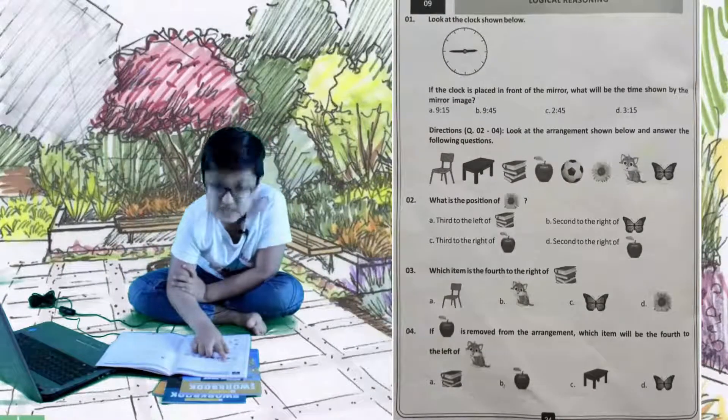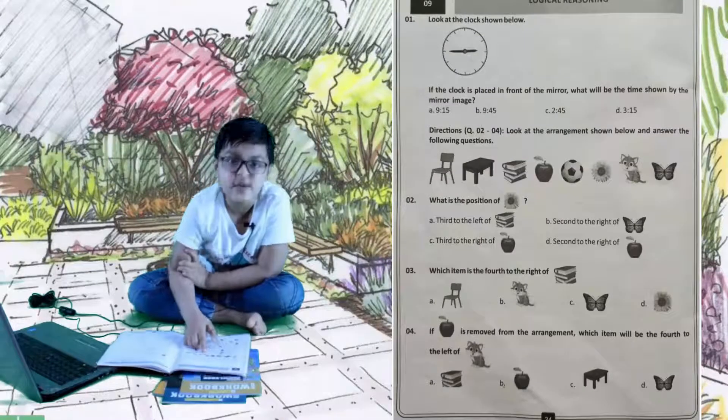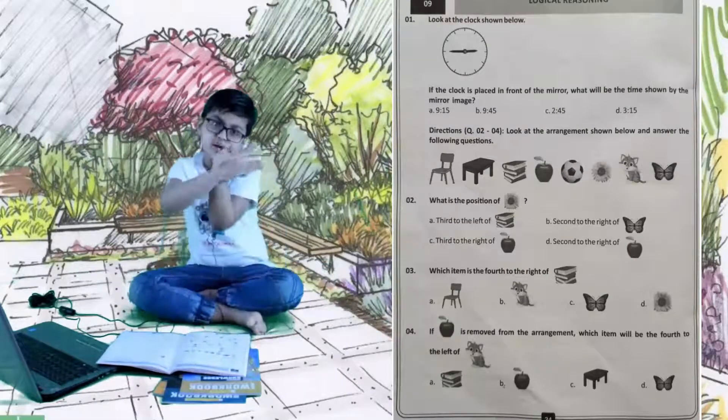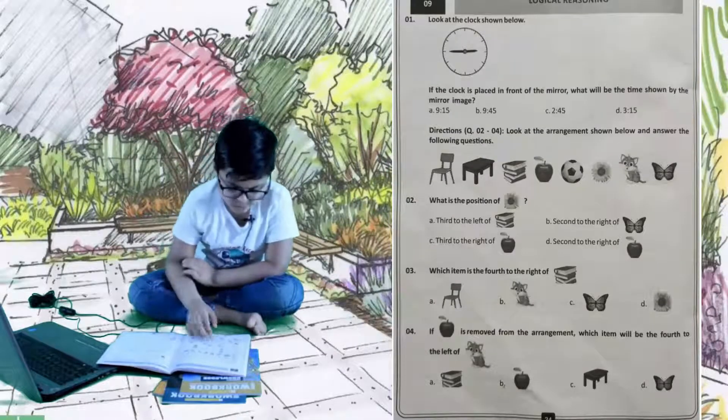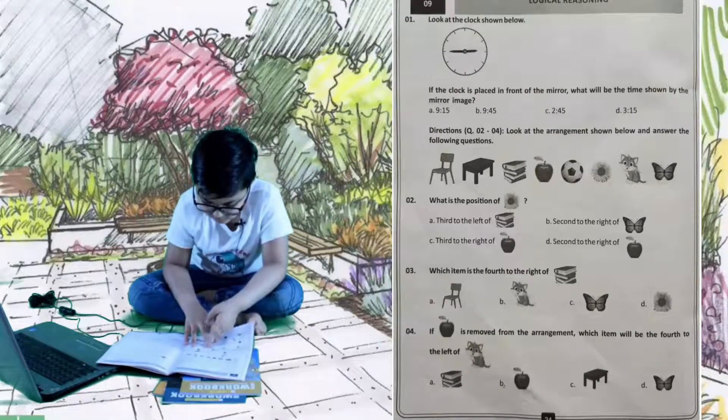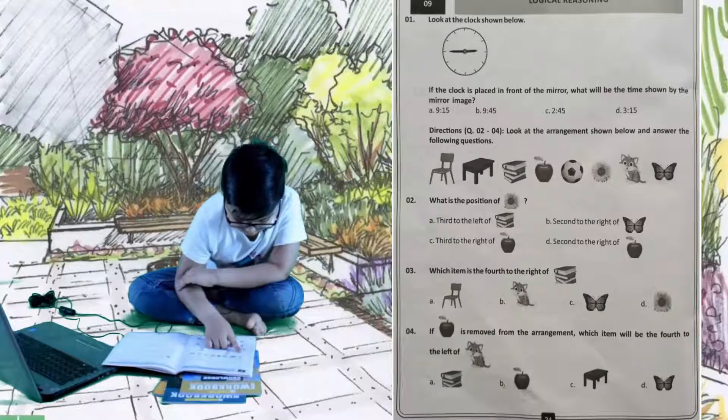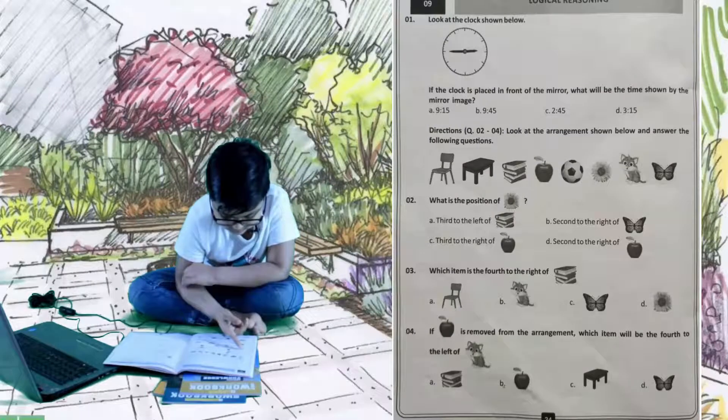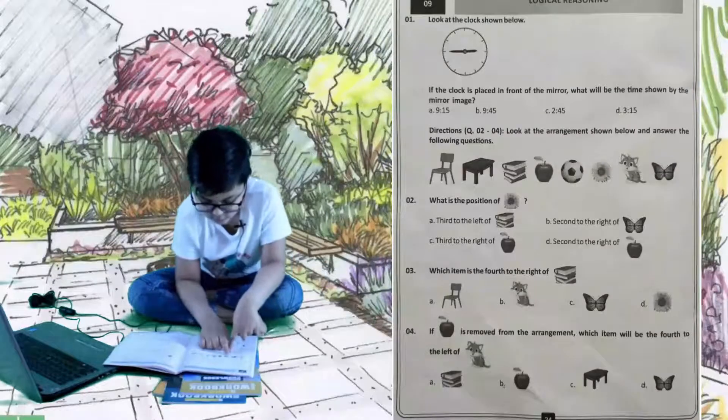Let's see the other options. B is 9:45, nope. C is 2:45, and D is 3:50, everything wrong because 9:45 will be like this, and 3:15 will be like this. So the right answer is A. Let's go to the next question. Look at the arrangement given below and answer the questions. Second question is: what is the position of the sunflower?